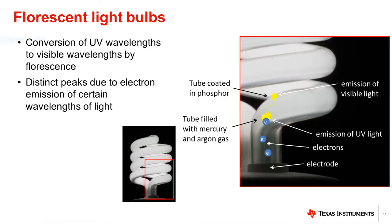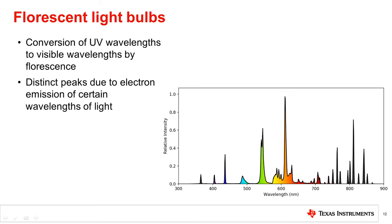Fluorescent light bulbs consist of mercury vapor inside a tube coated with a fluorescent material and use this process to convert UV light produced by the mercury to visible light. Because this process is governed by electrons absorbing specific wavelengths of light and emitting other specific wavelengths of light, the spectral output of fluorescent bulbs has distinct peaks at these emission wavelengths, as shown in the spectral plot.